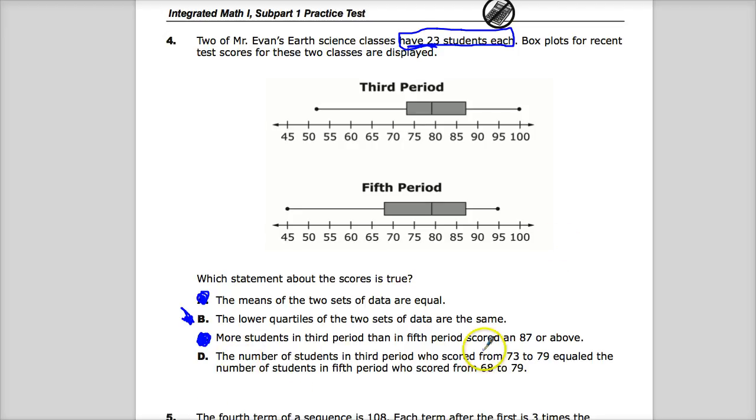The last thing, the number of students in third period who scored from 73 to 79, so from here to here, equaled the number of students in fifth period who scored from 68 here to 79 here. And you'll notice they have one thing in common, which is that that chunk of scores represents Q2 for both groups. And as I said before, each quarter has the same amount of students if the classes have the same amount of students. All of Q2 is covered by that spread, all Q2 is covered by this one. So I can say yes, the number of students in third period from this range is equal to the number of students in fifth period in this range. And I can mark out my little terribly drawn star in B, and then I'm good to go.